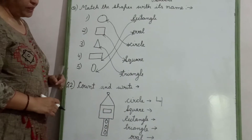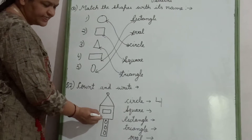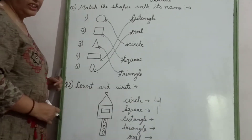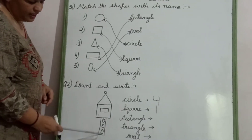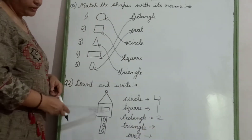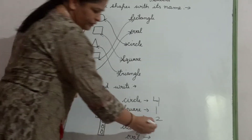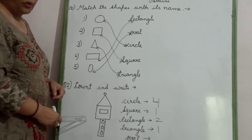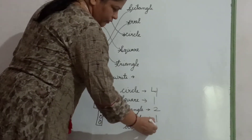Now tell me how many squares are there? Only one square is there. So we will write 1. Now rectangle — there are two rectangles. So we will write 2. Now tell me how many triangles are there? Only one. So we will write 1. Can you tell me how many ovals are there? There is no oval. So we will put 0.